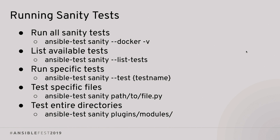Actually running a sanity test is pretty straightforward. If you want to run all tests in your current collection, run ansible-test sanity with the --docker option to delegate into a Docker container. Add -v for extra verbosity to make it easier to see what's going on. If you need to list all available tests, use --list-tests. You can also use --test to specify specific tests if you want to iterate on a previously failing test without running the whole list. Likewise, you can specify particular files or paths — you don't have to run tests over your entire collection.